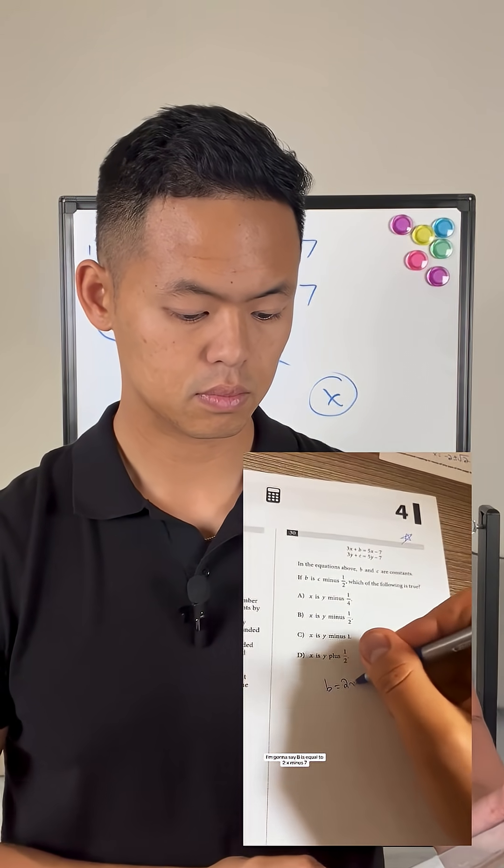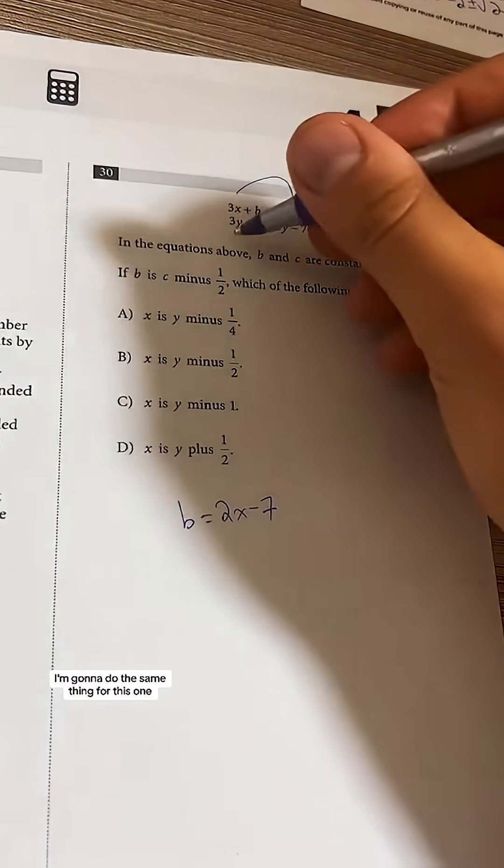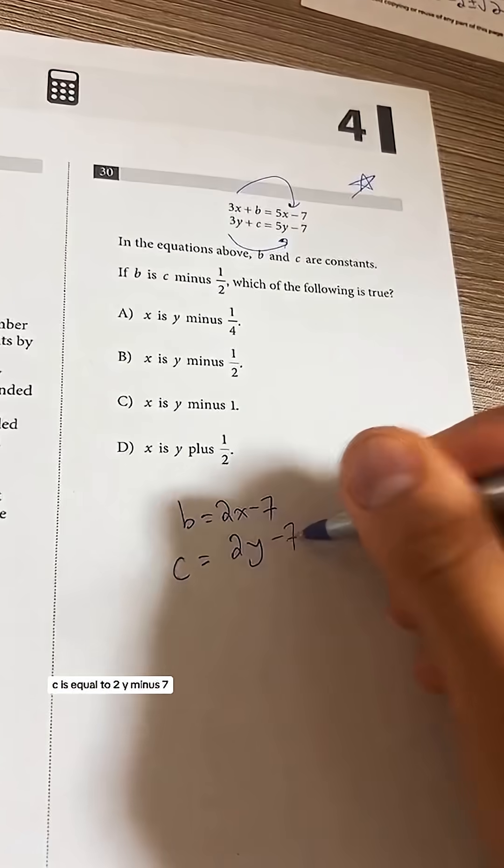I'm going to say b is equal to 2x minus 7. Do you notice how I'm just subtracting over the 3x? I'm going to do the same thing for this one, minus 7.